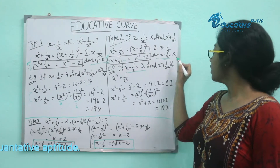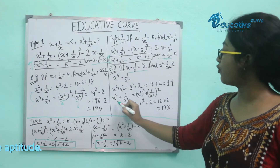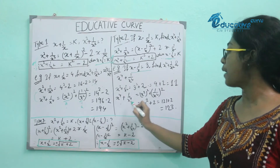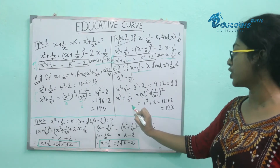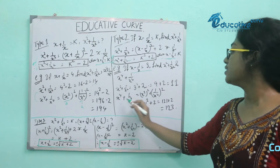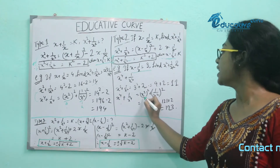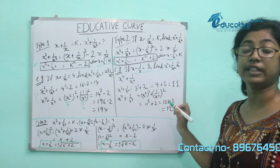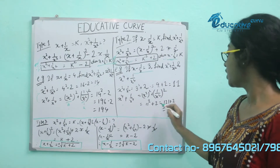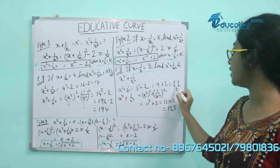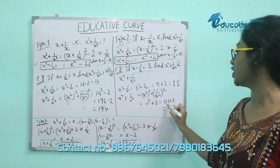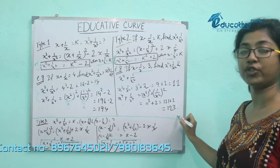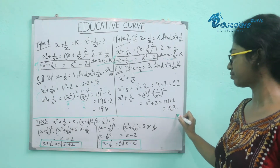For x to the power 4 plus 1 by x to the power 4, we use x squared plus 1 by x squared, all squared, minus 2. That is 121 plus 2, which is equal to 123.